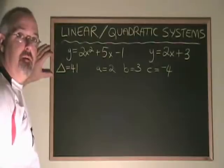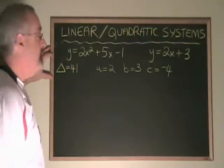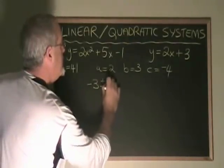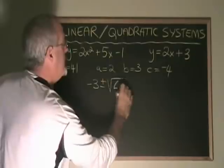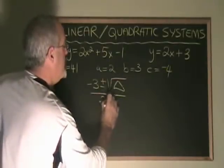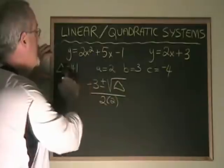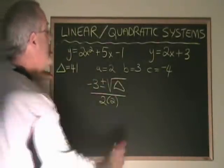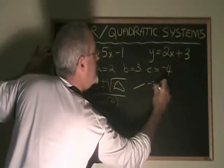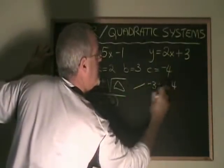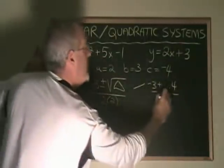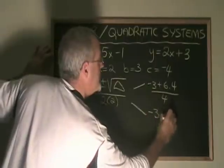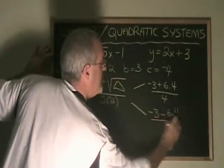To continue, our quadratic formula is negative b, which is negative 3, plus or minus the square root of delta over 2a, which is 2 times 2. The square root of 41 rounds to 6.4. So we do our split. We have negative 3 plus 6.4 over 4, and we have negative 3 minus 6.4 over 4.